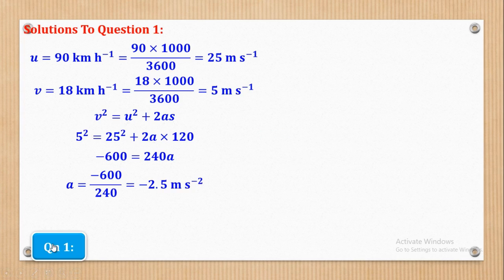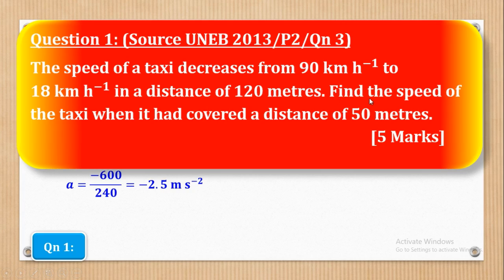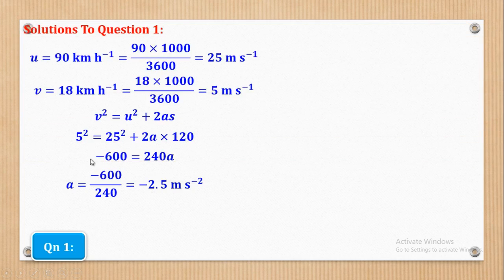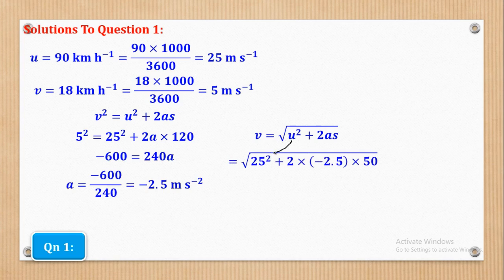Now that we have the initial conditions, we can answer the question: find the speed when the taxi had covered a distance of 50 meters. Going back to the third equation of motion, V² = U² + 2AS, I substitute U = 25, A = −2.5, and S = 50. Simplifying gives V = √(U² + 2AS), which works out to V = 19.3649 meters per second. That is the speed required.